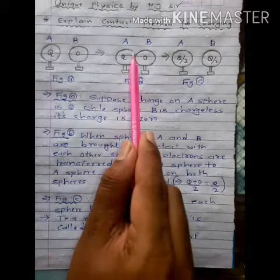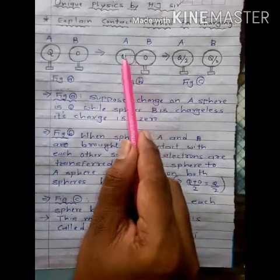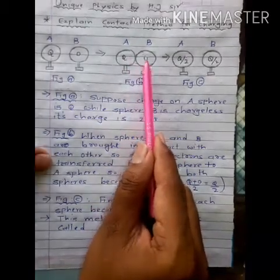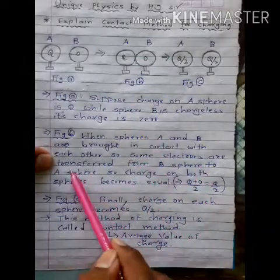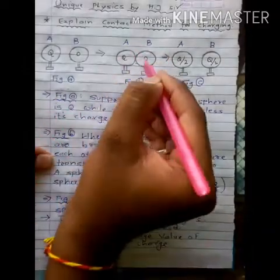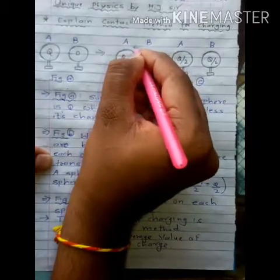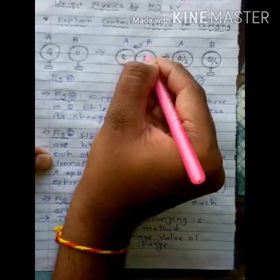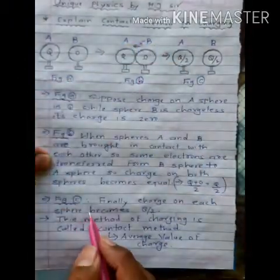As shown in Figure B, when sphere A and sphere B are brought in contact with each other, some electrons are transferred from B to A. Remember this point: electrons are transferred from B to A.